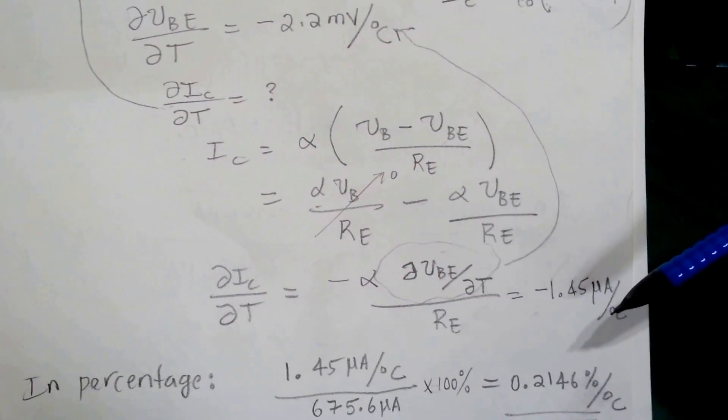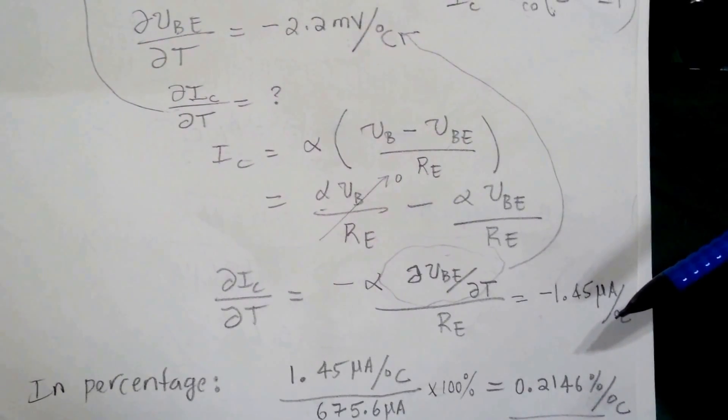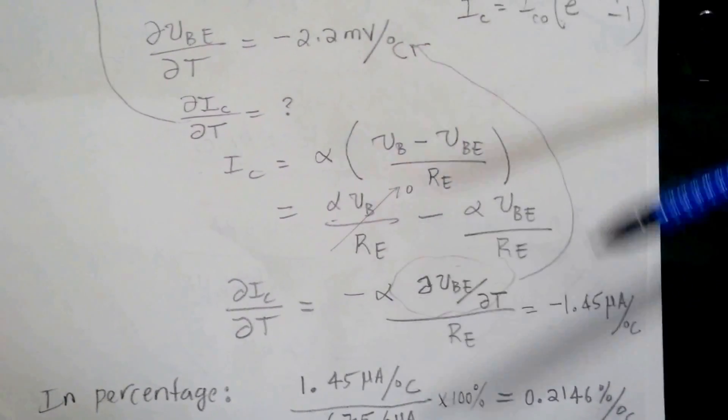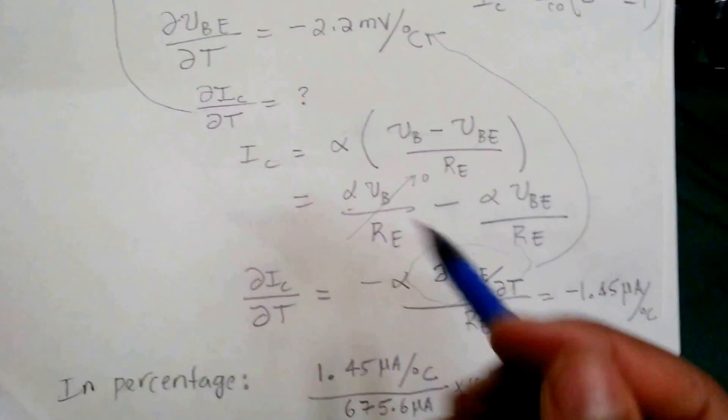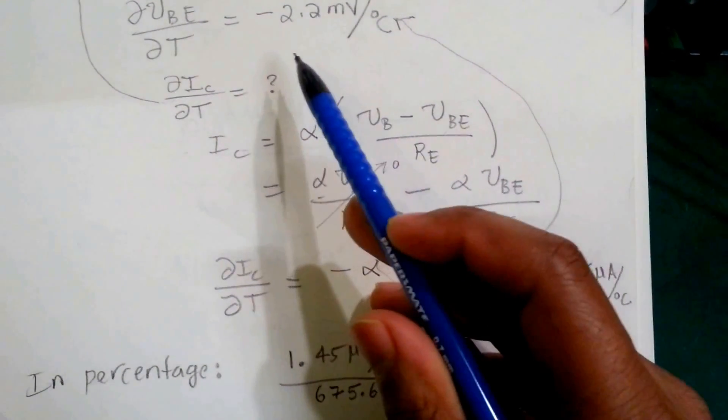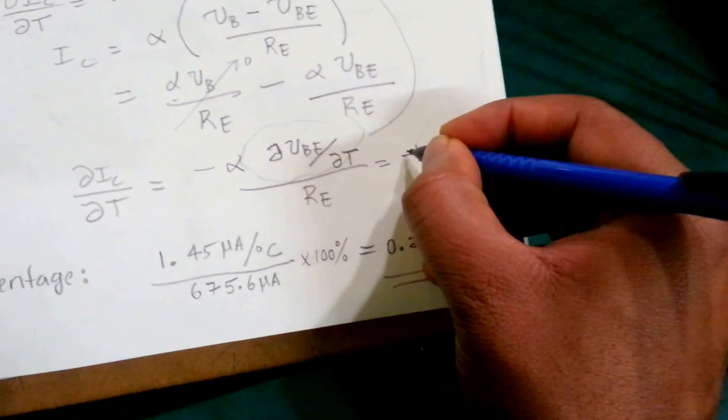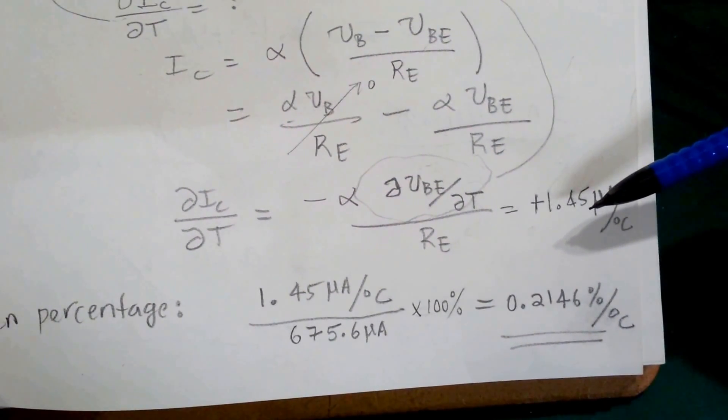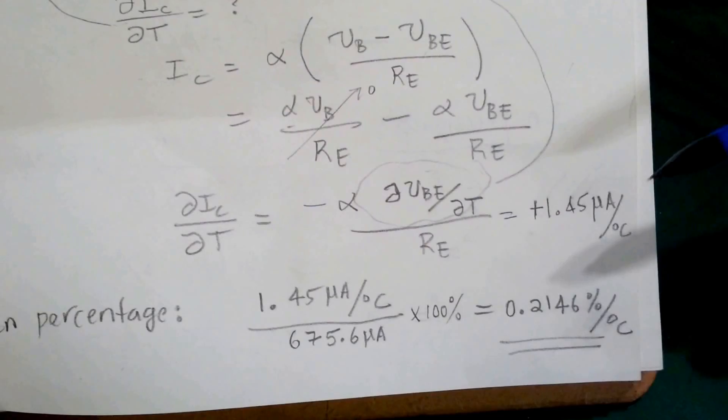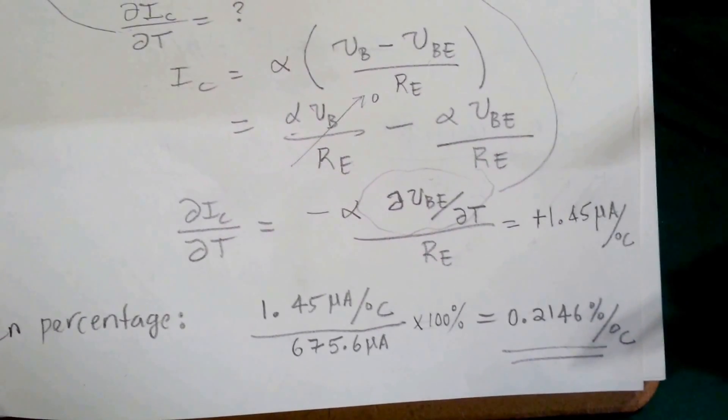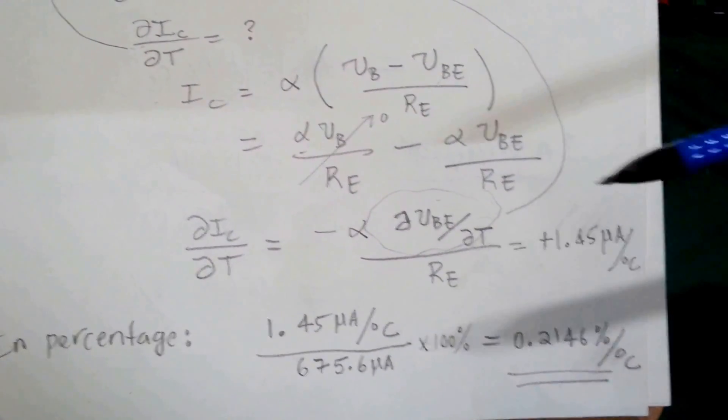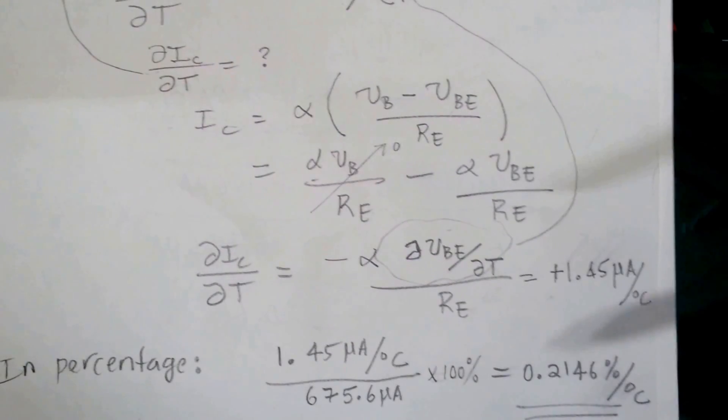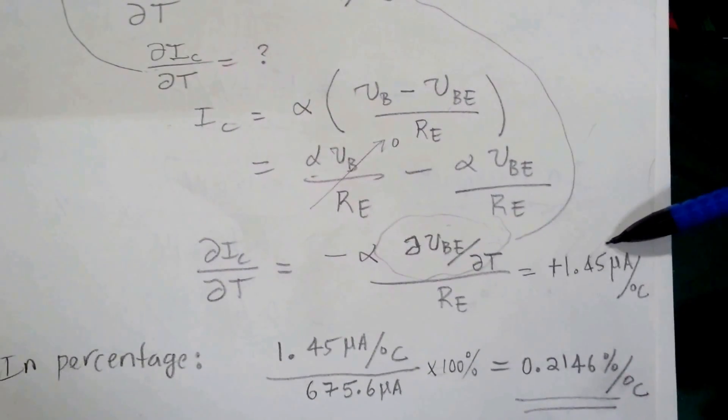You can see that, actually, my bad, this should be positive, right? Because we have this expression and we put in minus 2.2 here, this should be positive. So in fact, the collector current will increase by a value of 1.45 microamps per degree C. As the VBE decreases by minus 2.2 millivolts per degree C, that's how much the current will increase.